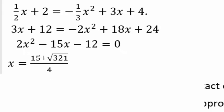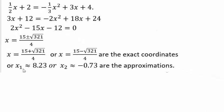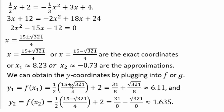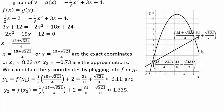To get approximate answers, you'll need a calculator. Using the quadratic formula gives x equals 15 plus or minus square root of 321, all over 4 — those are the exact coordinates. Plugging back into the linear equation, since they intersect they share the same y-coordinate, gives y approximately 6.11 for the plus solution and approximately 1.635 for the minus solution. So here's our downward-facing parabola and a straight line intersecting at those two coordinates.